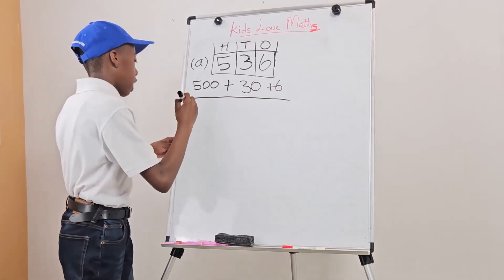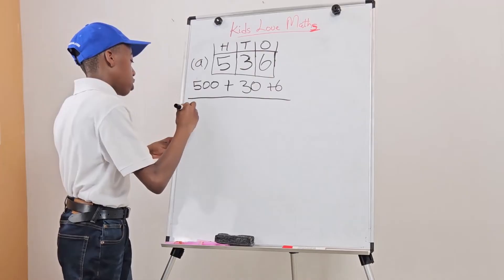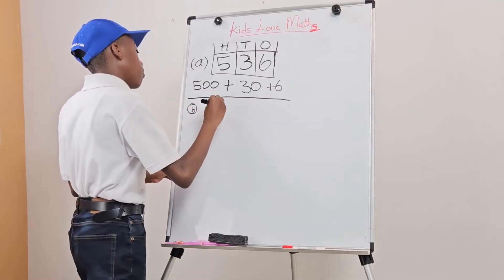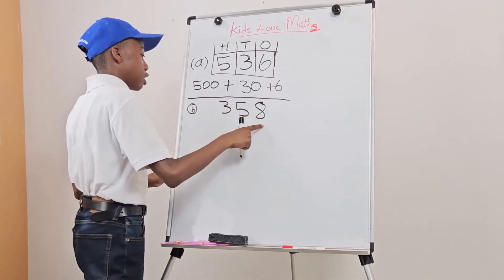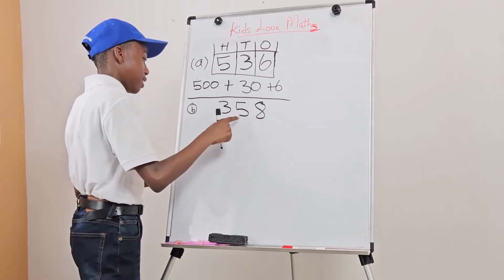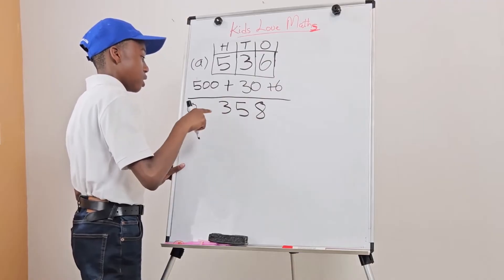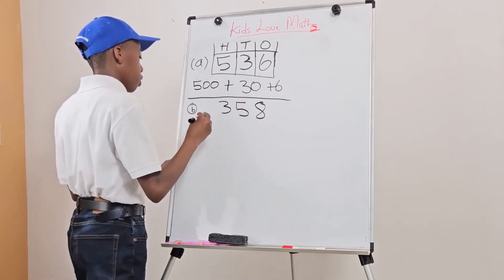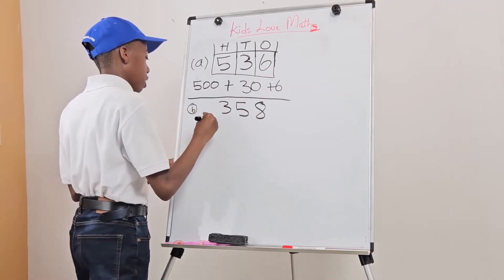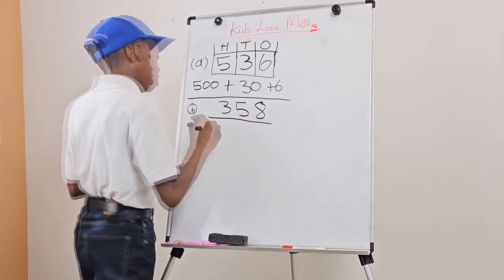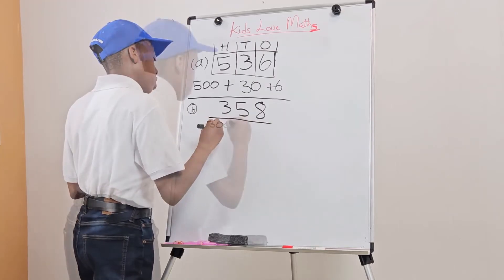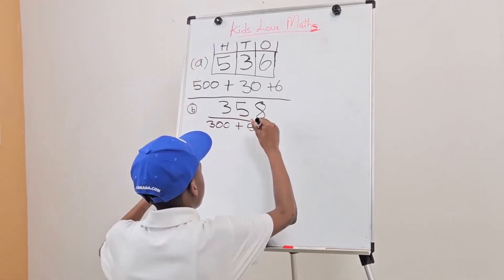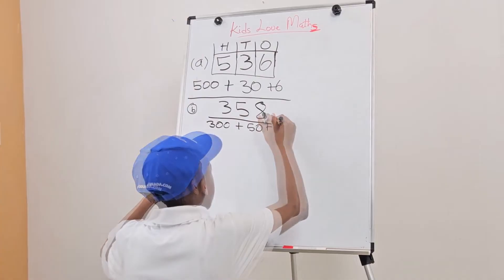The second question is 358. We already know this is the ones place, this is the tens place, and this is the hundreds place. So we would write it as 300 plus 50 plus 8.